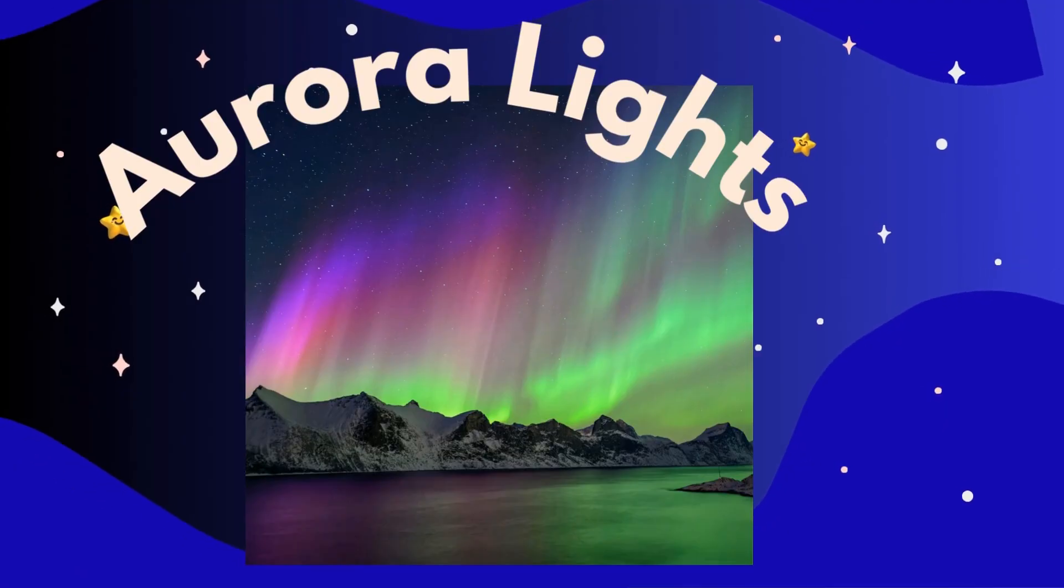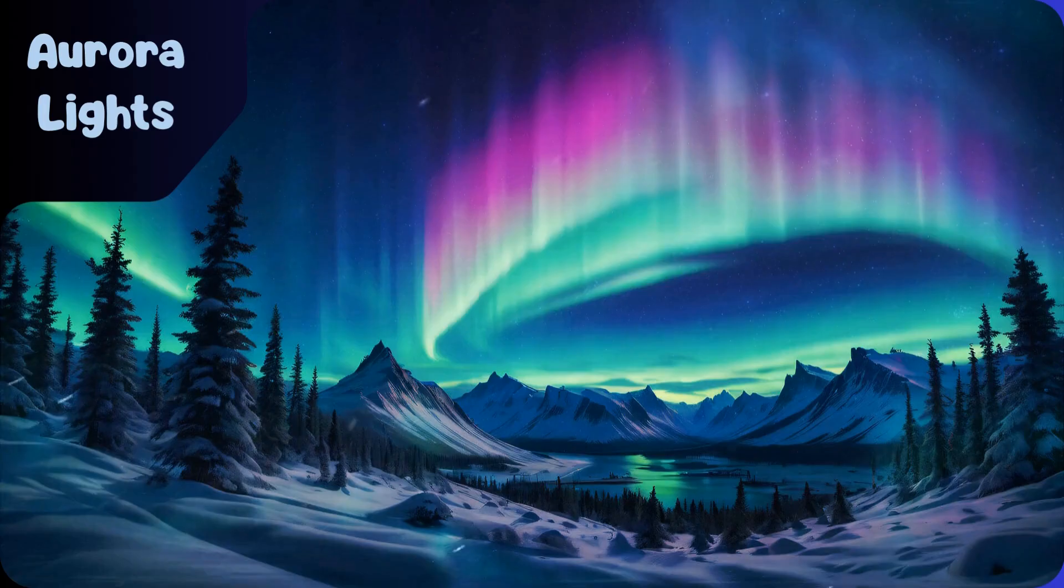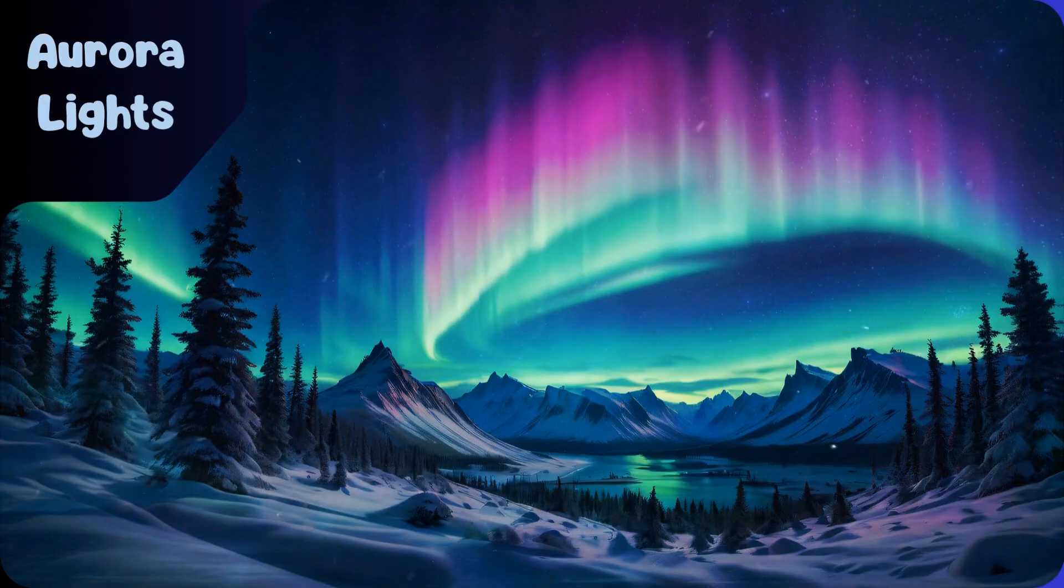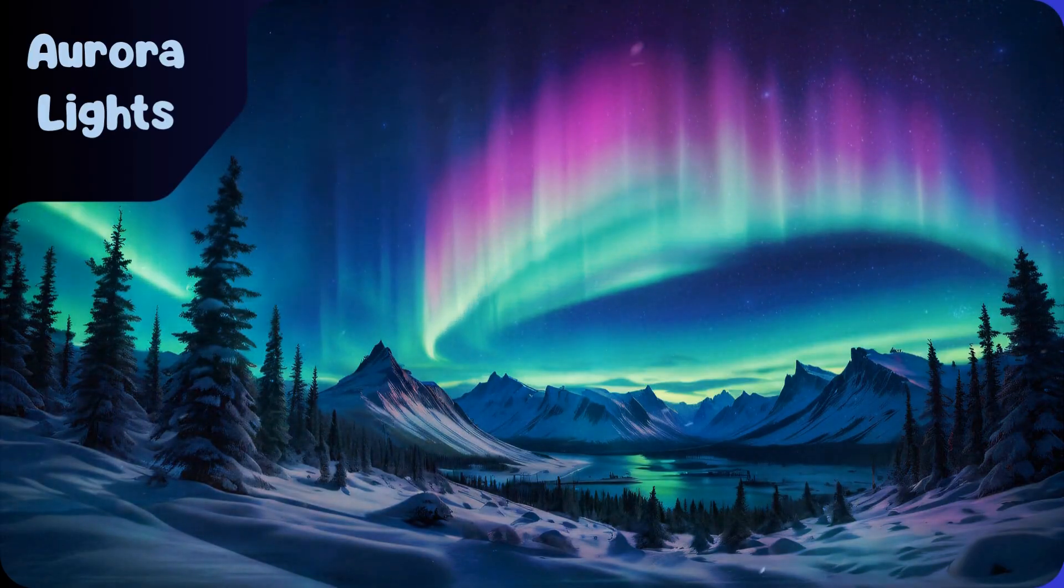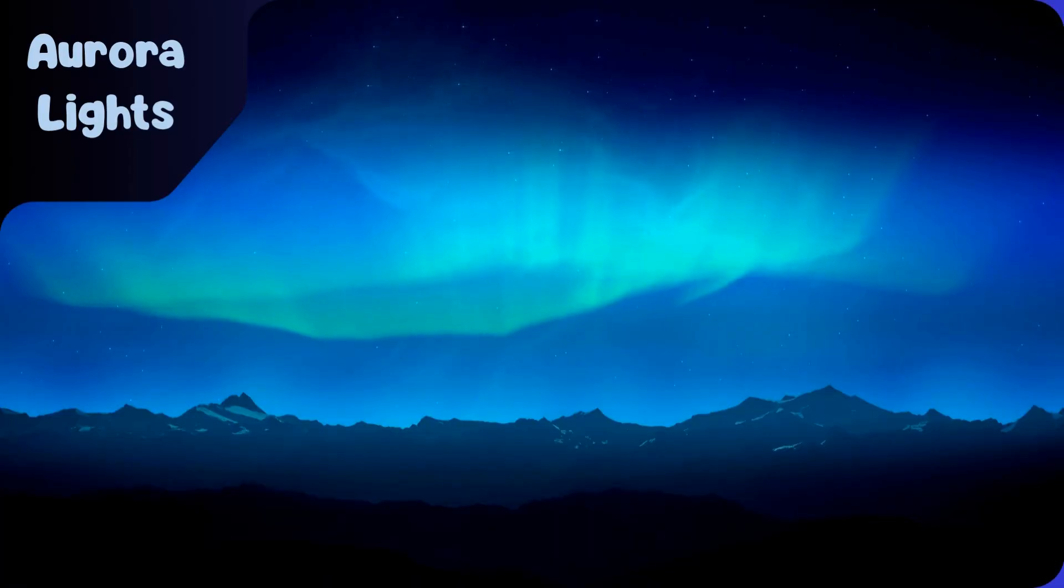Aurora lights. Some planets like Earth and Jupiter have glowing lights in the sky called auroras. They happen when charged particles from the sun meet the planet's magnetic field.